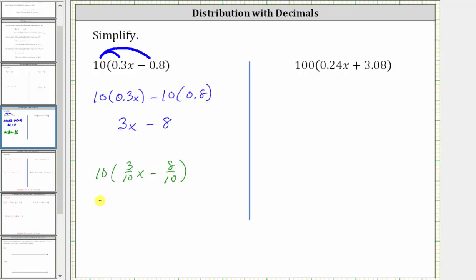And now distributing 10, we have 10 times 3-tenths x minus 10 times 8-tenths.